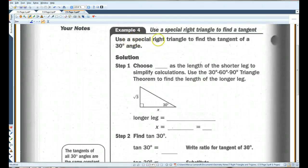Alright. In this case, we're going to use a special right triangle to find the tangent of a 30 degree angle. Okay. So, it doesn't tell you what kind of 30 degree angle. Any 30 degree angle will work. We know, hopefully you guys remember, that in a 30-60-90 triangle,